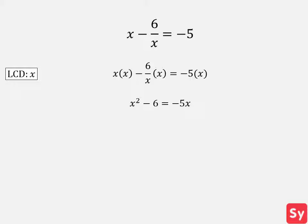We move 5x to the other side. Now we have a quadratic equation and can solve for x. We factor and get x minus 1 times x plus 6 equals 0. So we get x equals 1 and x equals negative 6. Now we check to see if any of the solutions are extraneous. Because the LCD is x, as long as x does not equal 0, then it is a solution. So this is our answer.